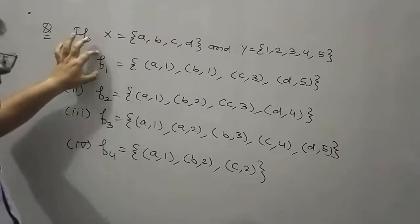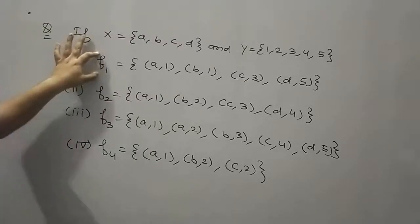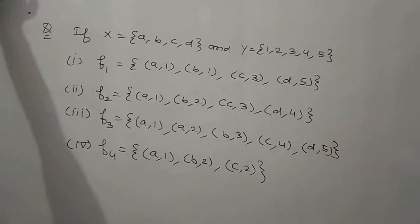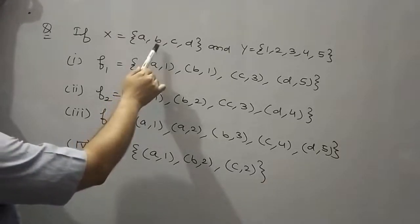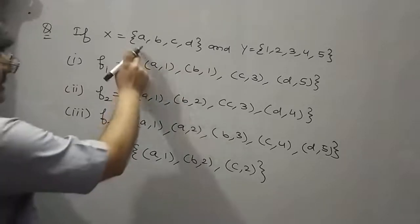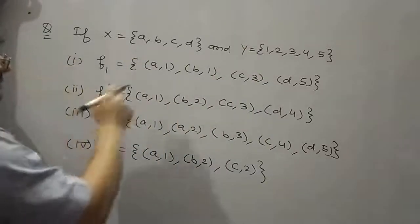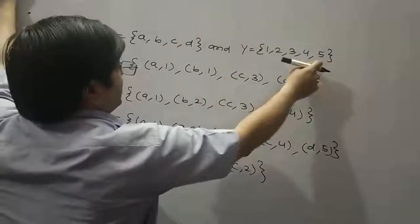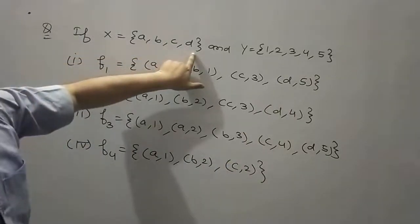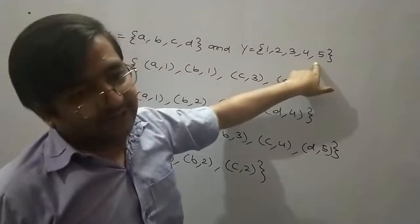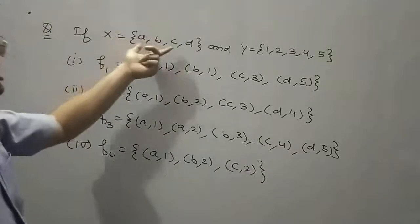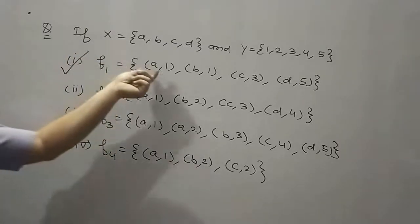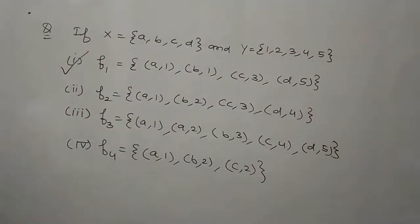Firstly we will check F1 according to the definition: for each X belonging to capital X, there exists a unique Y belonging to capital Y. Here, A maps to 1, B maps to 1, C maps to 3, and D maps to 5. So for each element of X, there exists a unique element of Y. That is why F1 is a function.